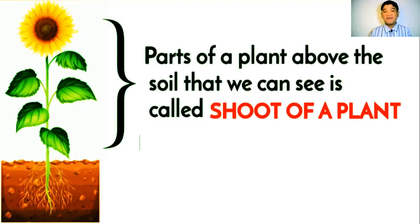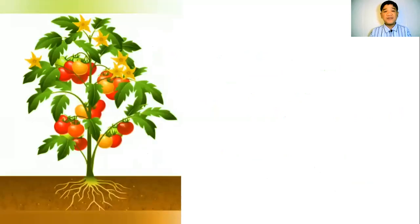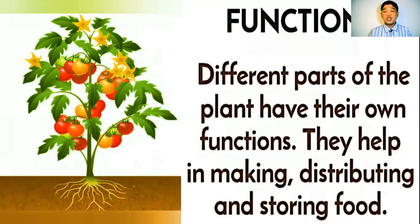The parts of the plant you can see above the soil is what we call the shoot of a plant. On the other hand, the parts of the plant that are below — which cannot be seen — is what we call the root of a plant. The functions of the different parts help in making, distributing, and storing food.